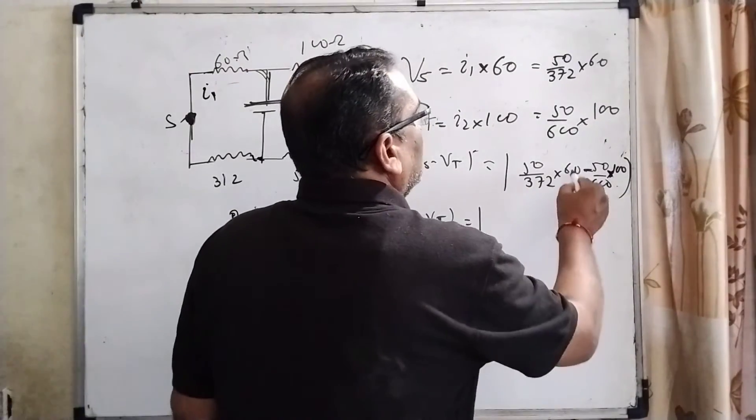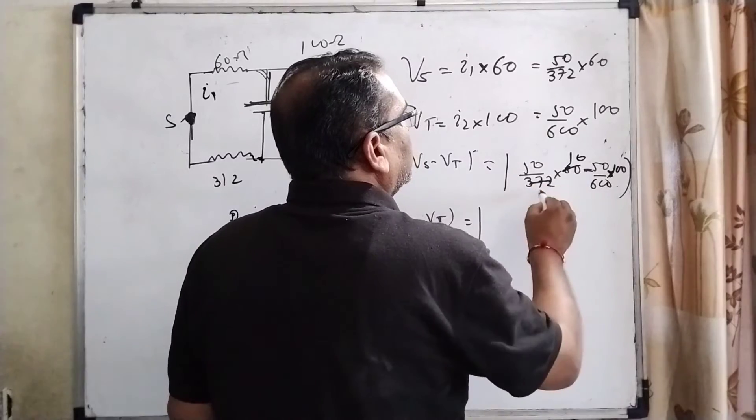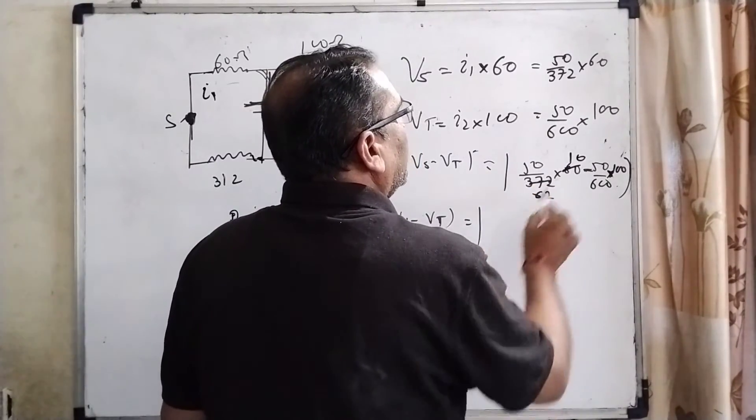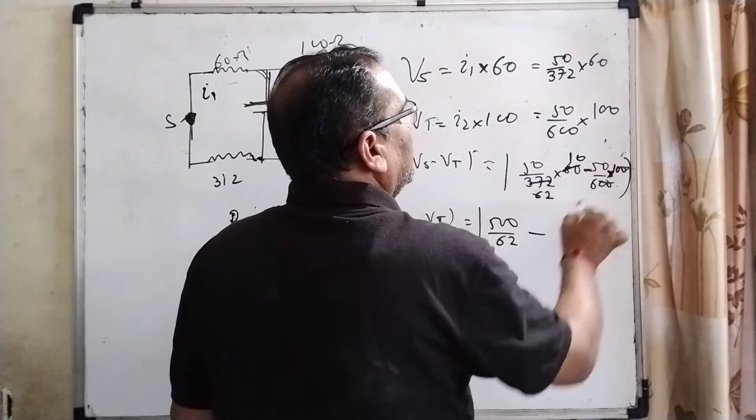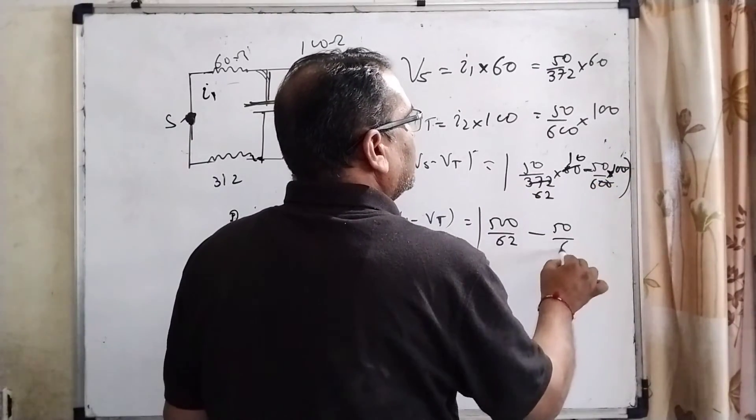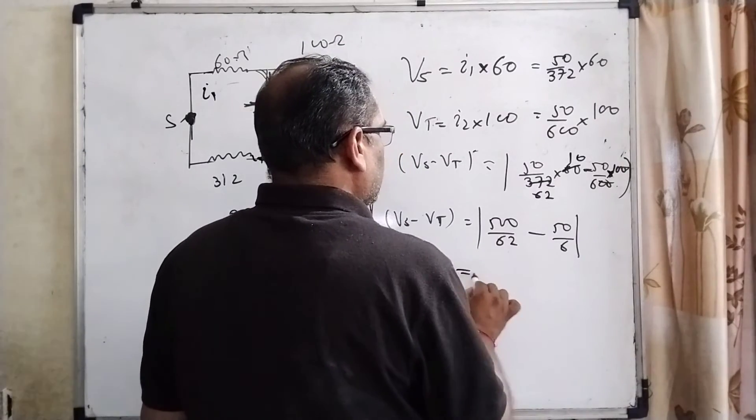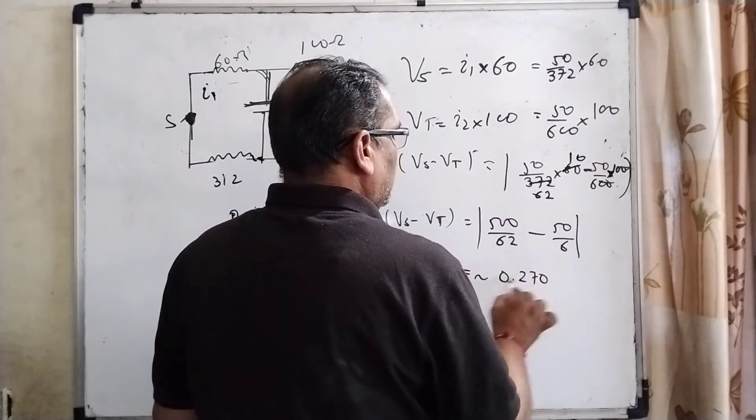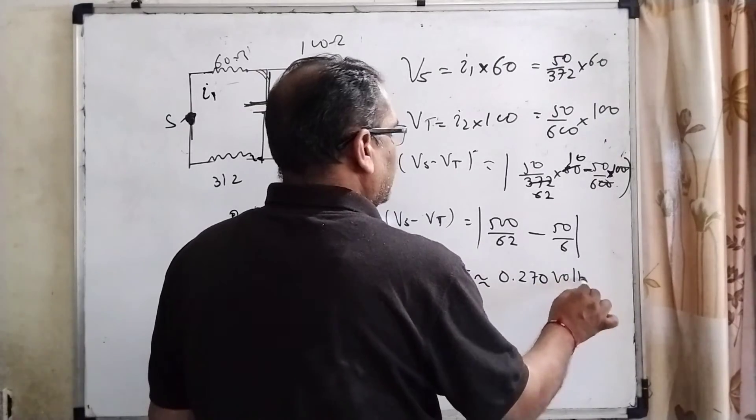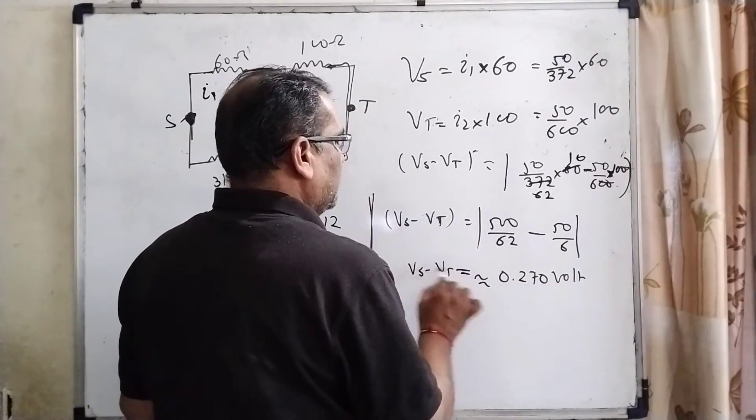Now simplifying: 372 becomes 62 times 6, which gives 500 by 62. And here 50 by 6. After solving we get approximately 0.270 volts. This is the correct answer. I hope you understand this question.